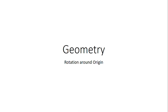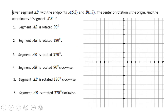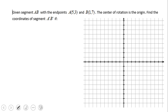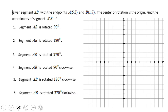Welcome back to C-Square. In this video clip we're going to talk about rotation in geometry. This video clip covers rotation around the origin. We're going to look at six problems. The first three rotate segment AB 90, 180, and 270 degrees counterclockwise, and the last three — problems four, five, and six — rotate the same segment clockwise.